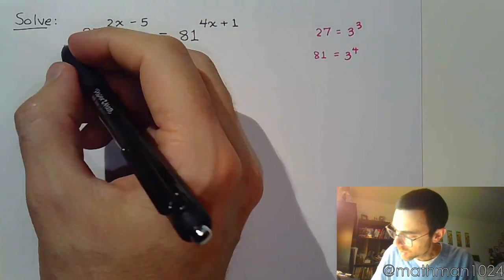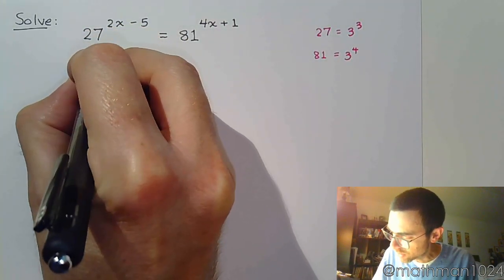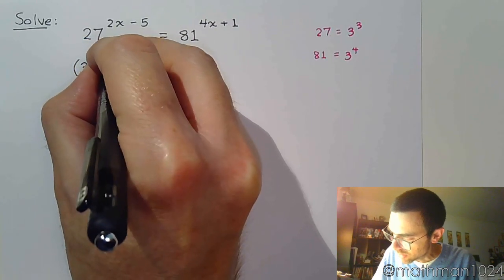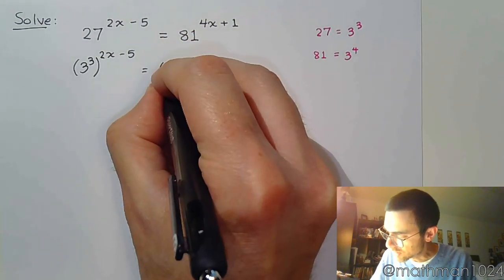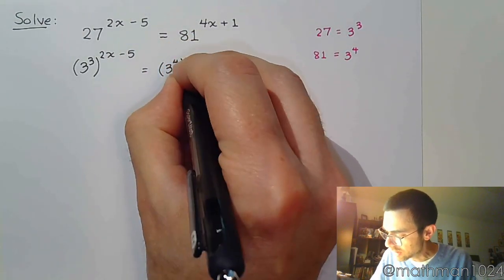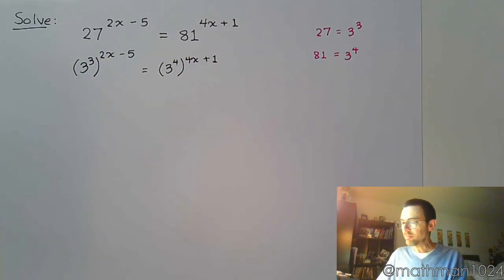So we're going to rewrite each of these. 27 becomes, as we have shown there on the right, 3 to the 3rd, raised to the 2x minus 5. 81, we're rewriting as 3 to the 4th, all raised to the 4x plus 1.